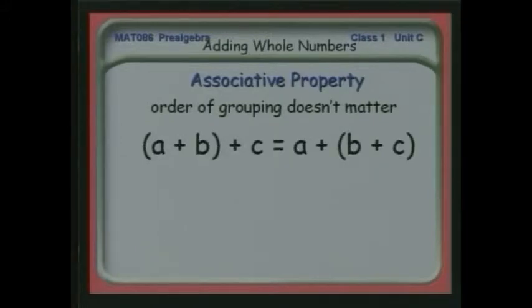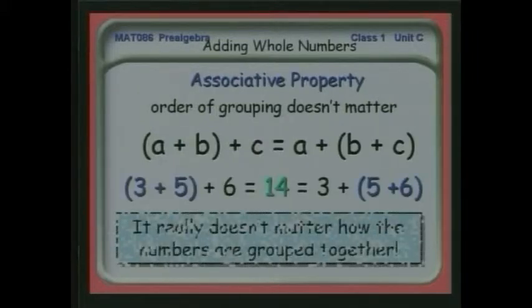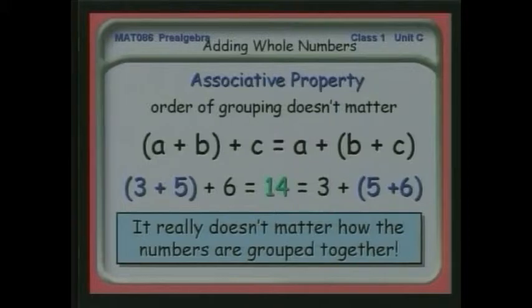This is actually one of the properties of addition called the associative property. What it says is that the order of grouping doesn't matter. To put it in more abstract terms, we have a plus b grouped together plus c. That's exactly the same as a plus the grouping b plus c, where a, b, and c are any numbers. Our example showed that. So what we can say is that it really doesn't matter how numbers are grouped together.